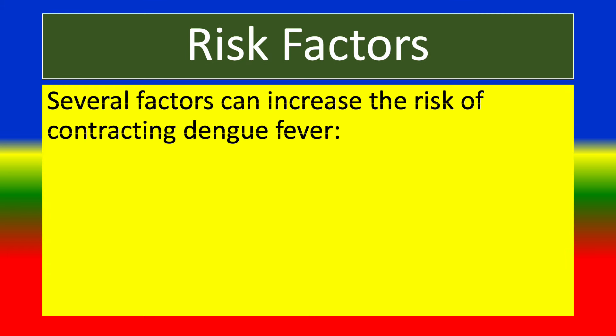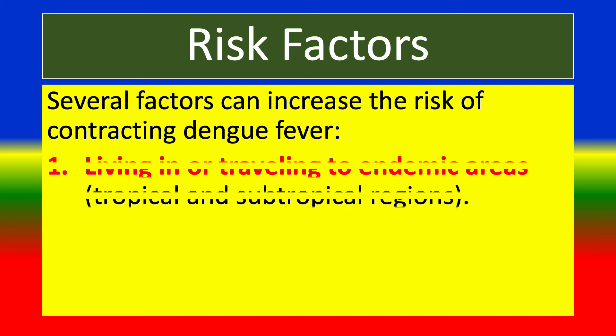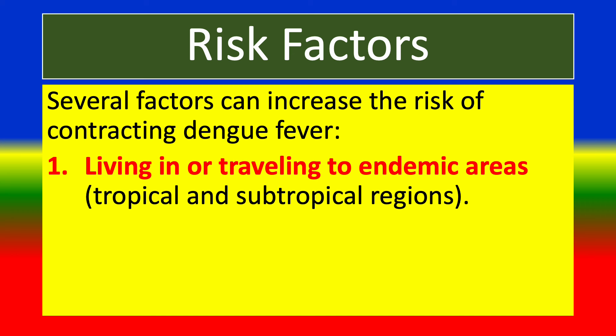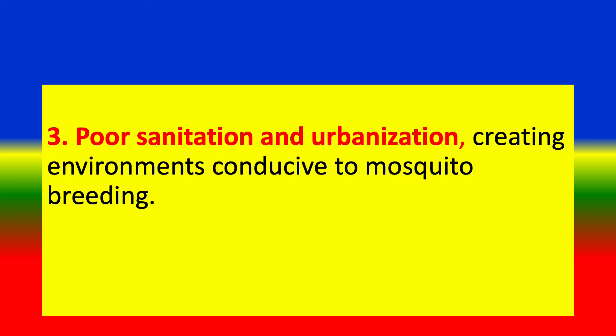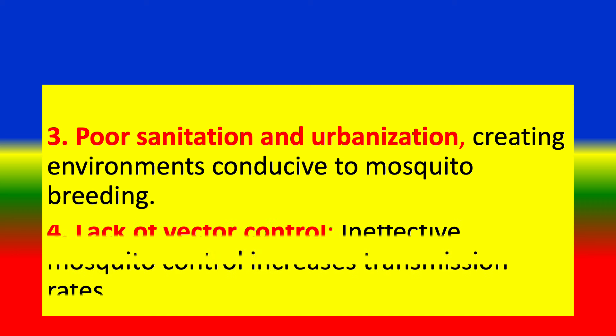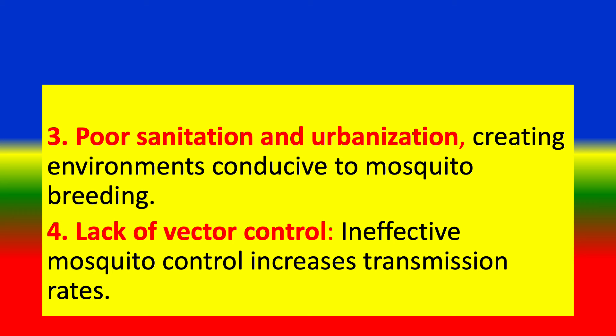Risk factors. Several factors increase the risk of contracting dengue fever: living in or traveling to endemic areas, mainly tropical and subtropical regions; a previous dengue infection, as a second infection with a different serotype increases the risk of severe dengue; poor sanitation and urbanization creating environments conducive to mosquito breeding; and lack of vector control, where ineffective mosquito control increases transmission rates.